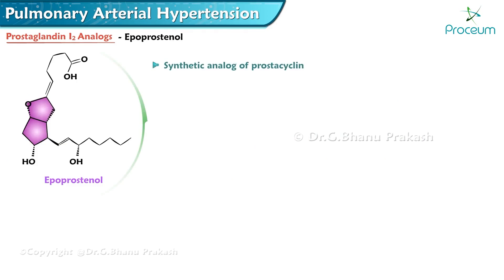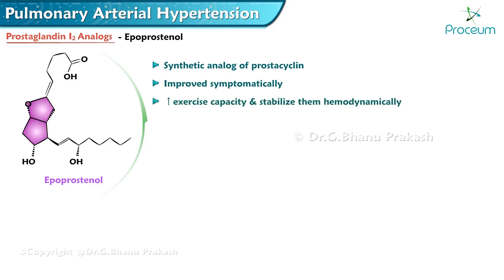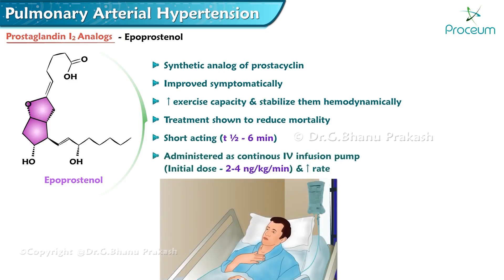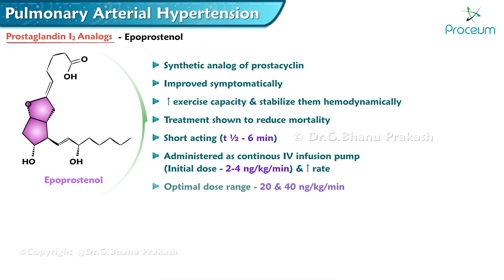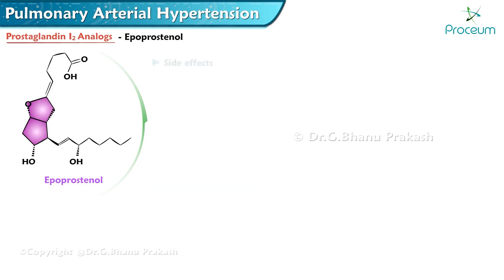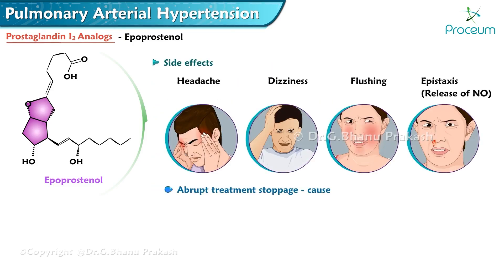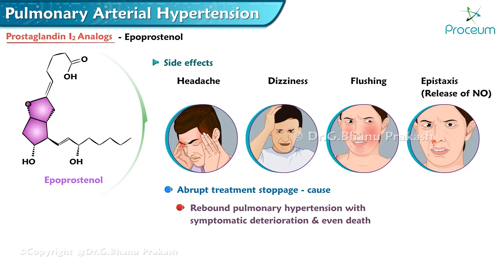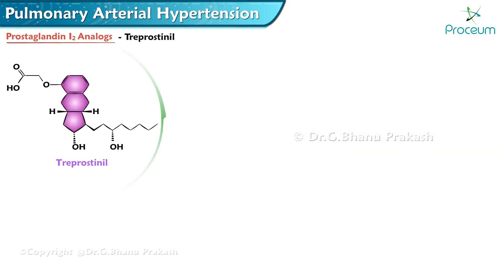Epoprostenol is a synthetic analog of prostacyclin that improves patients symptomatically, increases exercise capacity, and stabilizes them hemodynamically. It is the only treatment shown to reduce mortality. It is short-acting with a half-life of six minutes and is administered as a continuous intravenous infusion at an initial dose of 2 to 4 nanograms per kilogram per minute, with an optimal dose range of 20 to 40 nanograms per kilogram per minute. Abrupt treatment stoppage may cause rebound pulmonary hypertension and even death.